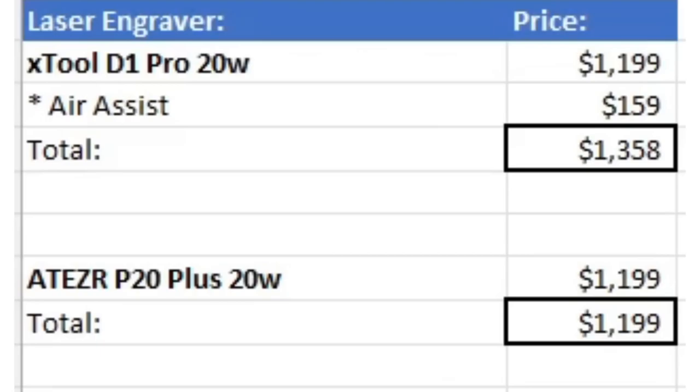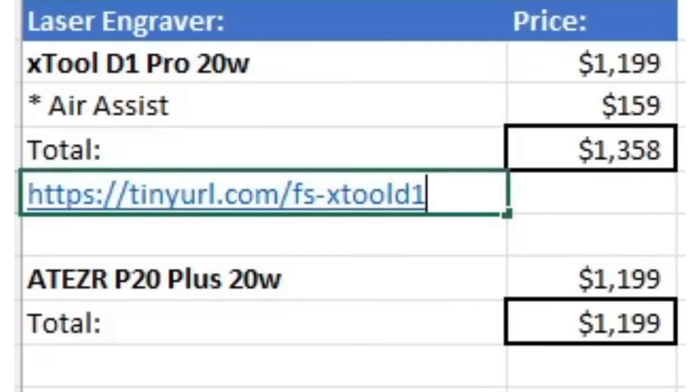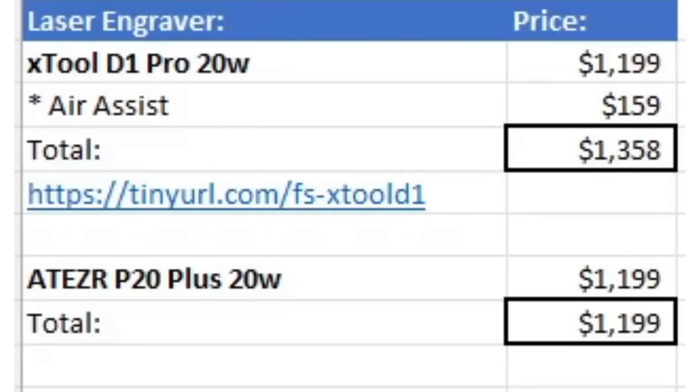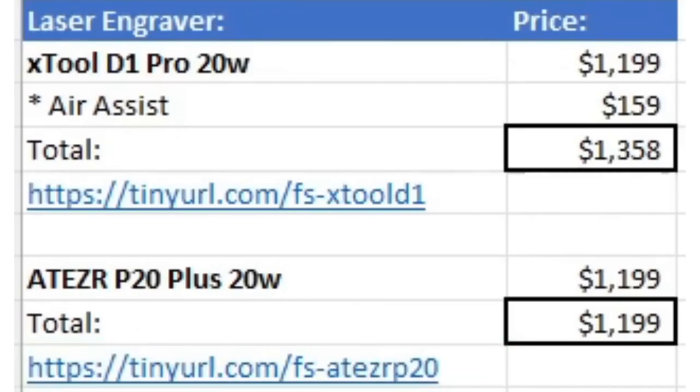Also, I have two links for you to use if you're thinking of possibly adding one of these machines to your shop. For the X-Tool, use tinyurl.com slash FS dash X-Tool D1. And for the Ateser, use tinyurl.com slash FS dash Ateser P20. Both these links can be found in the video description, and you'll be helping out the channel if you make a purchase using either one of them. So thanks.